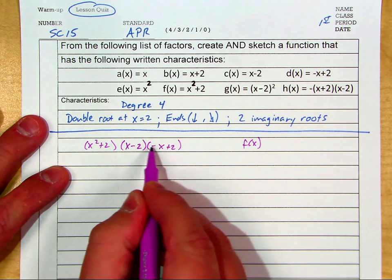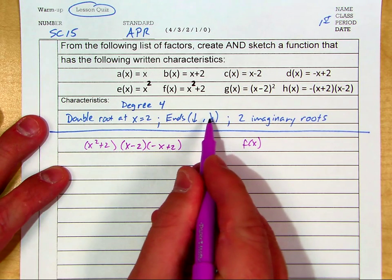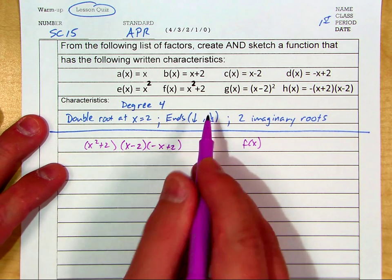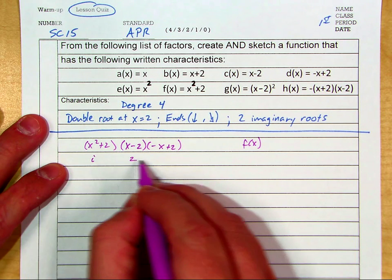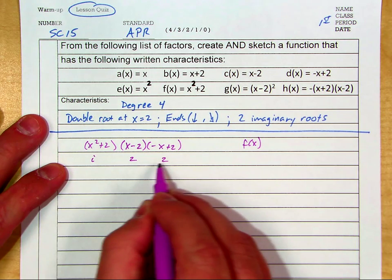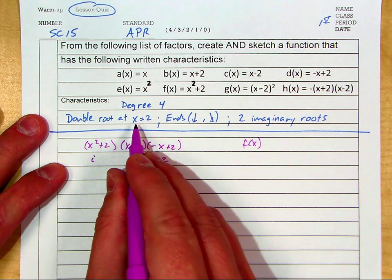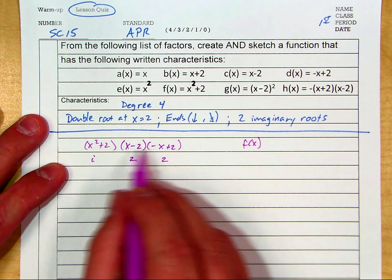That is going to be the negative we need to make our right end behavior down. So our zeros from these two are an imaginary pair. We've got 2 and 2, so I have a double root at 2, which is exactly what the characteristics wanted. And do we all see four zeros right there?